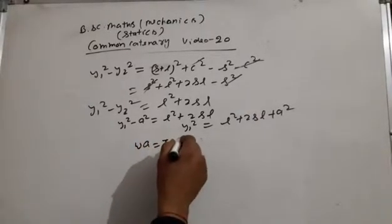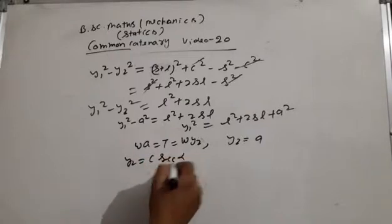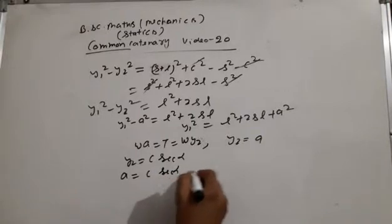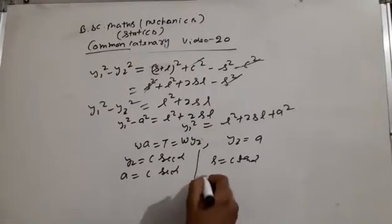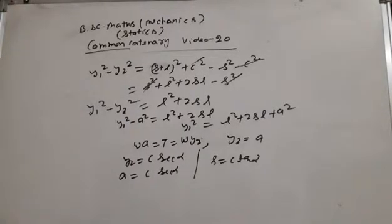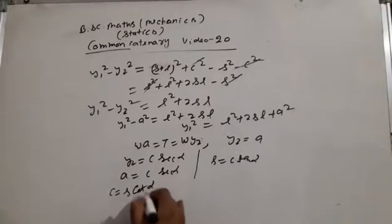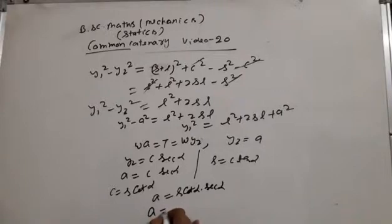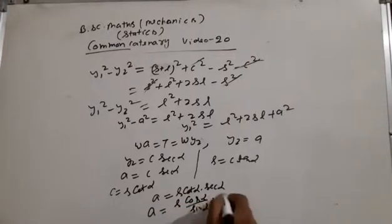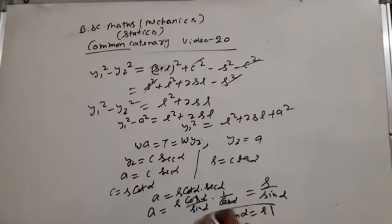With w equal to T and y2 equal to a, we have y2 equal to c sec alpha. And s equals c tan alpha. Substituting c value: a equals c times (sin alpha / cos alpha) times sec alpha, which simplifies. After cancellation, a sin alpha equals s, so s equals a sin alpha.